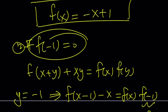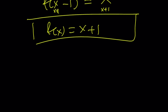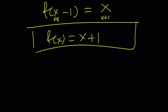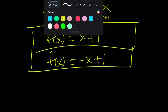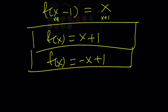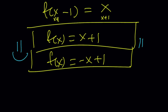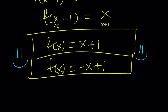So we have two solutions for this functional equation: f of x equals negative x plus 1, and f of x equals x plus 1. These are all the solutions because we considered all the cases. This brings us to the end of this video. Thank you for watching — please comment, like, and subscribe. I'll see you next time. Until then, be safe, take care, and bye-bye.